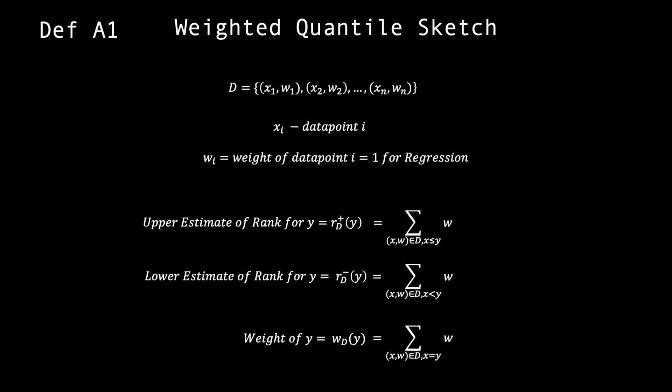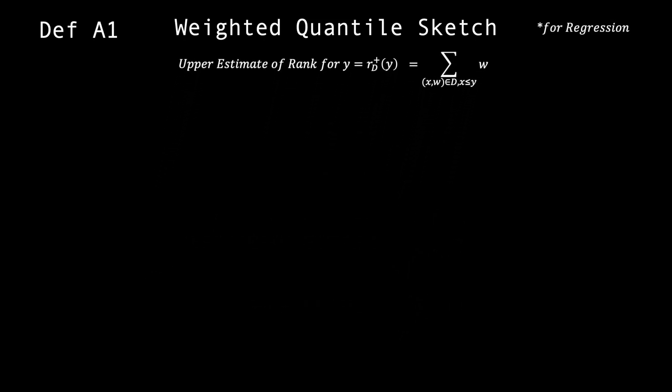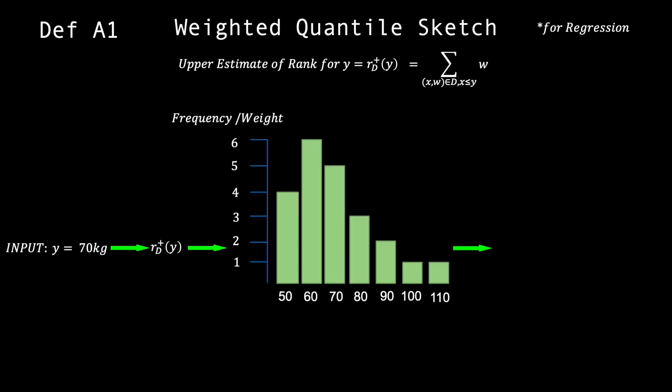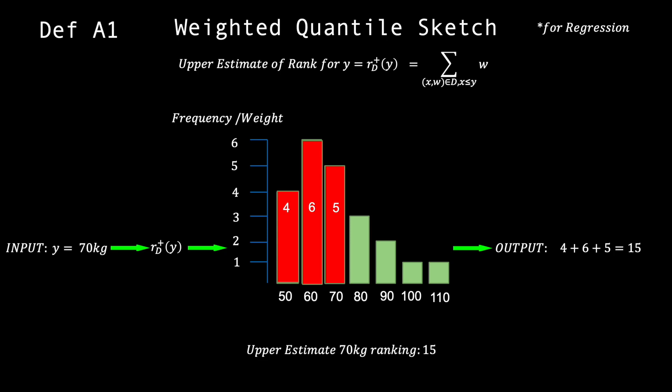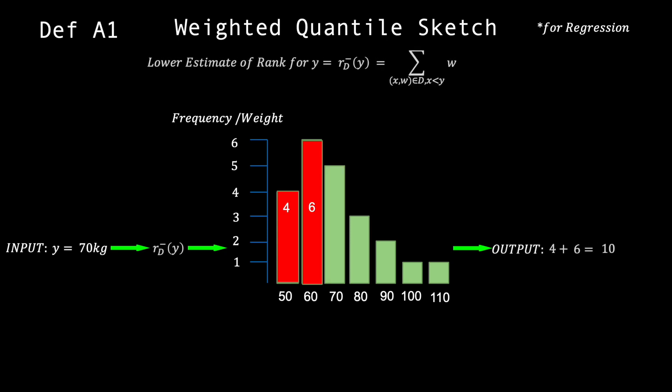We start with definition A1. The paper defines two rank functions, which are basically functions that take in a data point, and give you an upper estimate of where it ranks among other data points in the dataset D it came from.